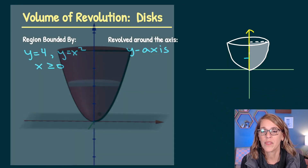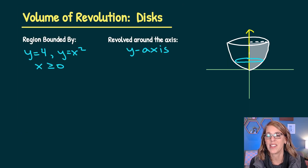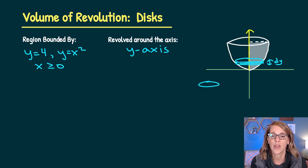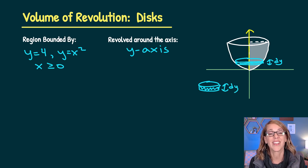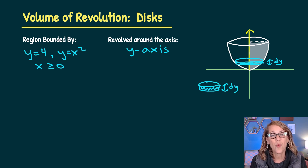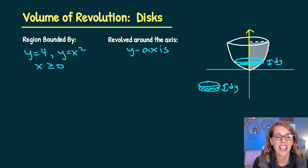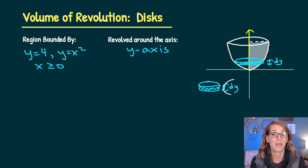If I draw one of those disks on my image here in blue, I can see that it's got thickness in the y direction — that thickness is dy. You can see there's that thickness dy. Knowing this thickness is really important because it tells you what variable to use as you're integrating. Because we're using y as our variable of integration, everything in my integral is going to be in terms of y.